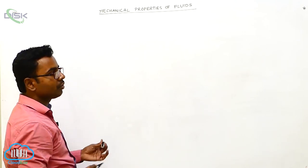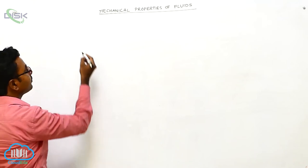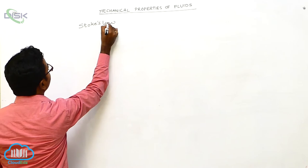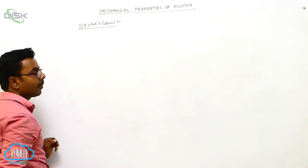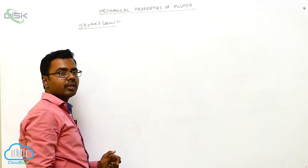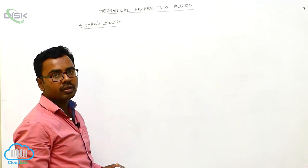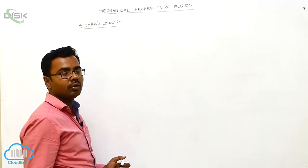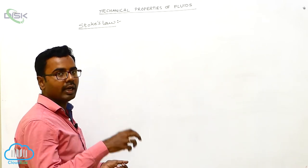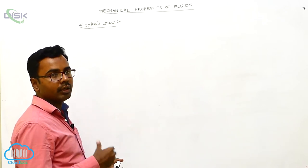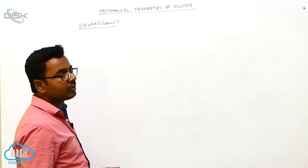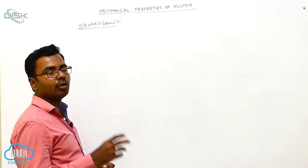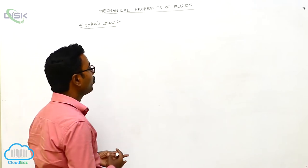Now we discuss Stokes' law. Stokes' law gives the formula for viscous force acting on an object whenever it is falling down a fluid column.